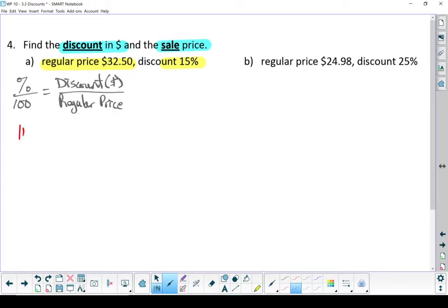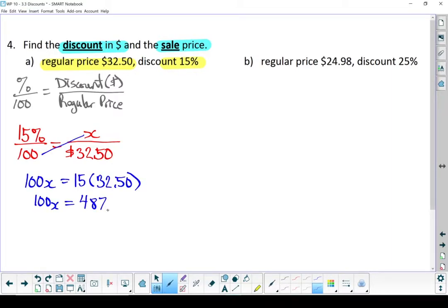Let's put in what we know. Our discount is 15%. Our regular price is $32.50. What I don't know is how many dollars I'm going to save. Let's cross multiply. Divide both sides by 100. So my discount is $4.88.